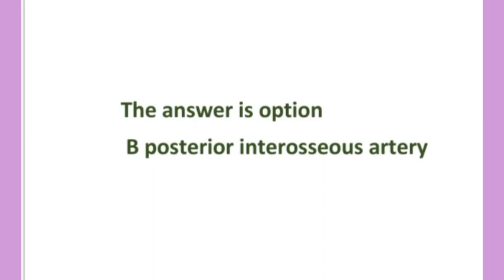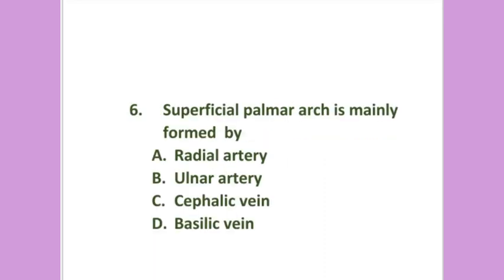The answer is option B: posterior interosseous artery. Superficial palmar arch is mainly formed by: radial artery, ulnar artery, cephalic vein, or basilic vein.